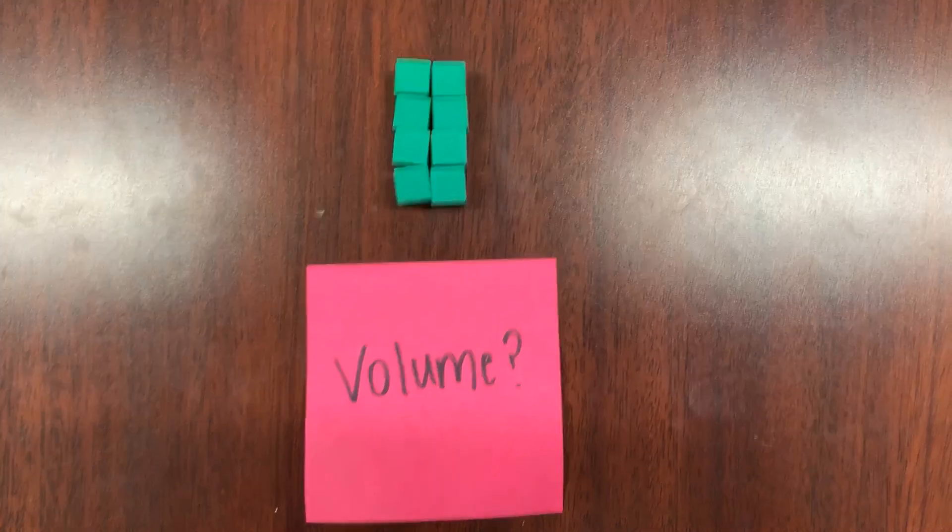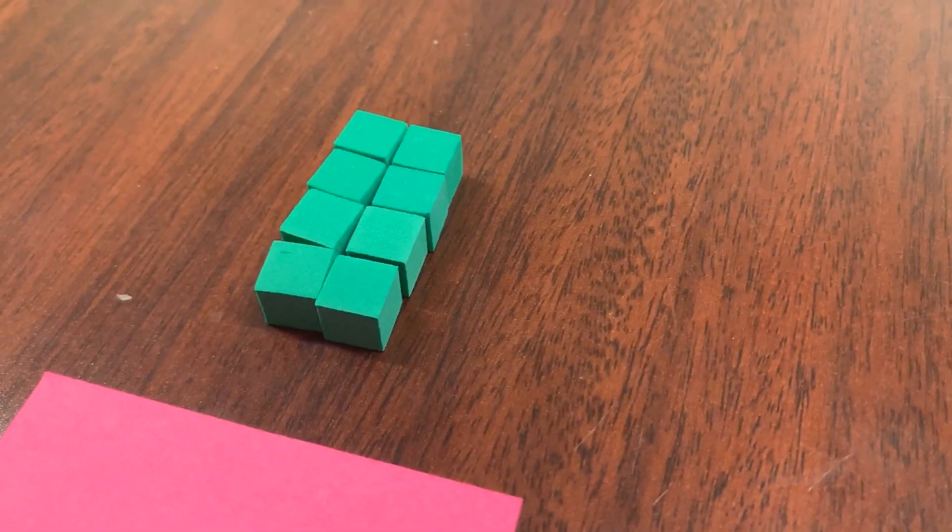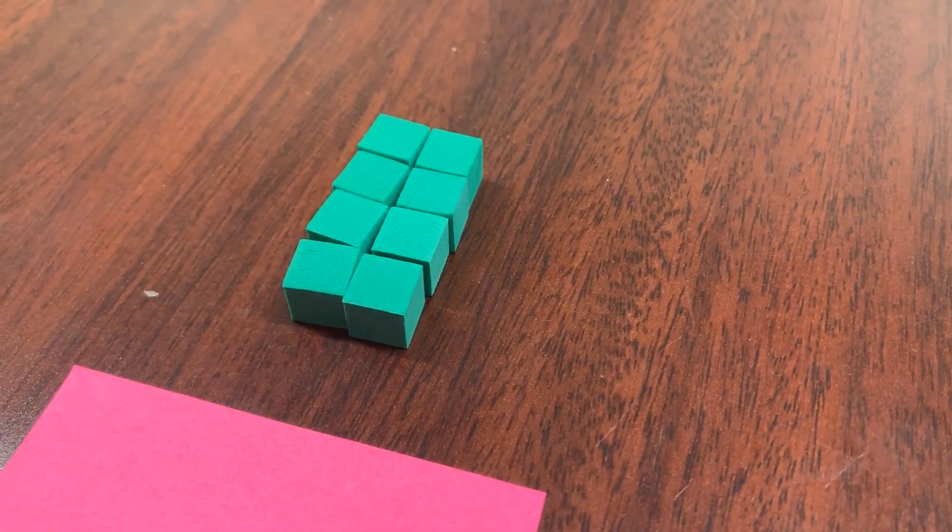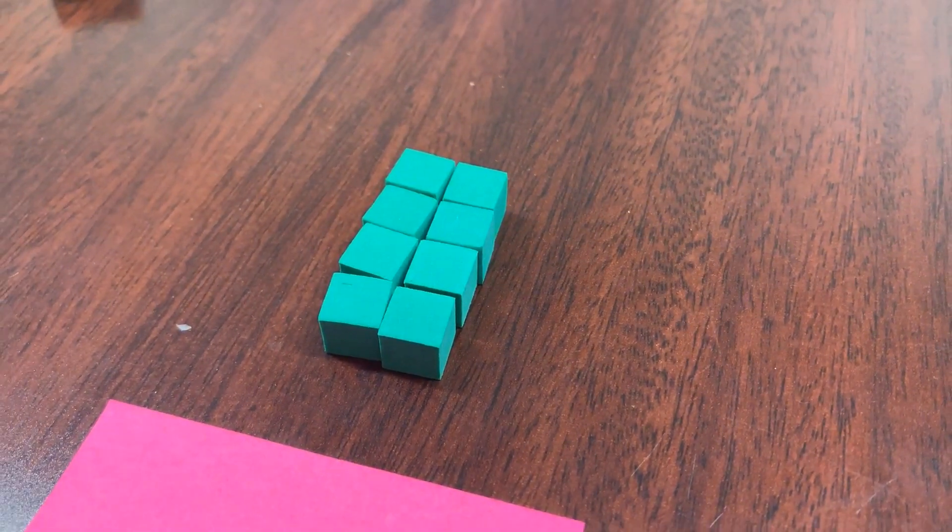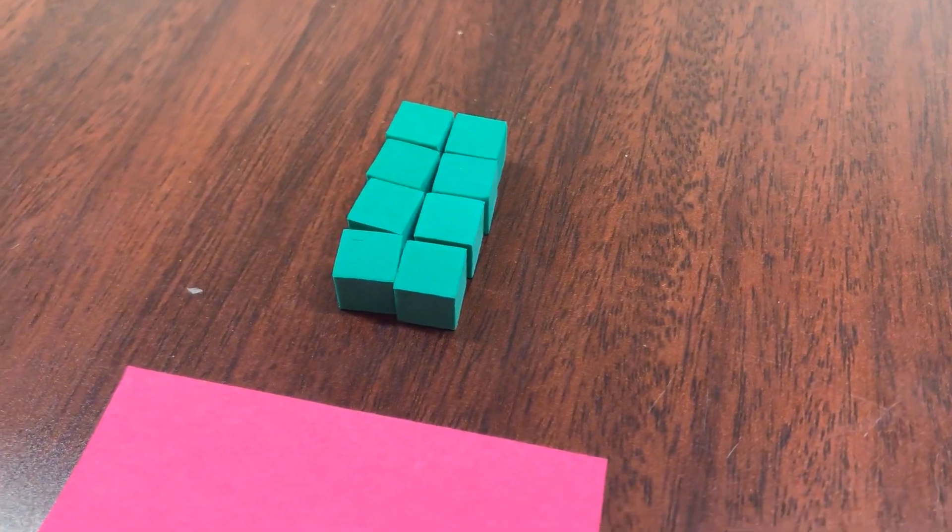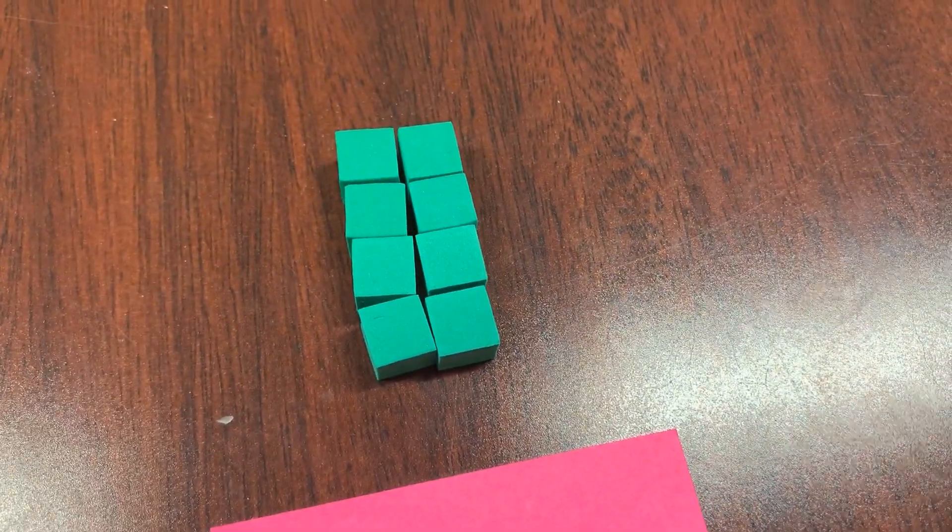All right, let's look at this next problem. So I have the base layer here for you. See if you can count out how many unit cubes make up that base layer. If you said eight, you are correct. Our base layer is made out of eight unit cubes.